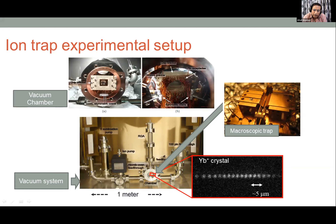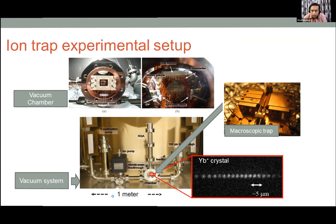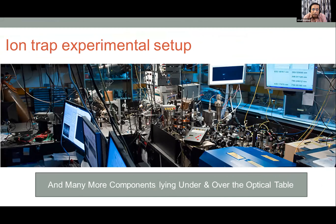This is the actual picture of the laboratory I designed at University of Sussex — a full vacuum system with ion pumps, RGAs, and sublimation pumps. The vacuum chamber houses the ion trap: a macroscopic 3 cm × 3 cm trap capable of trapping 10–20 ions in a linear configuration. The overall vacuum system is about one to two meters in size.